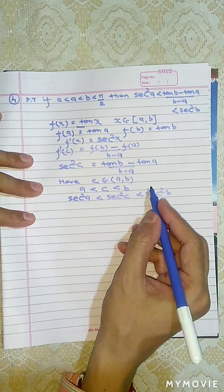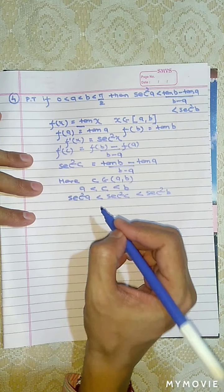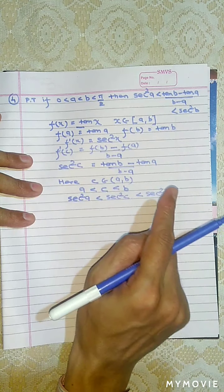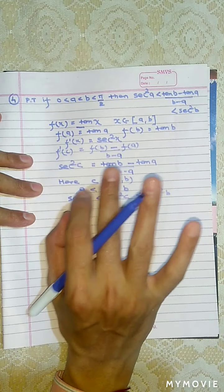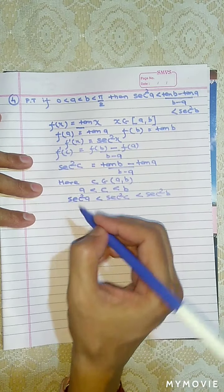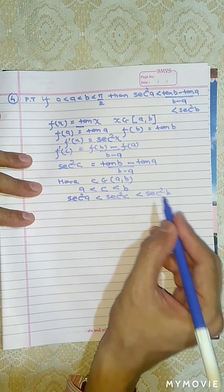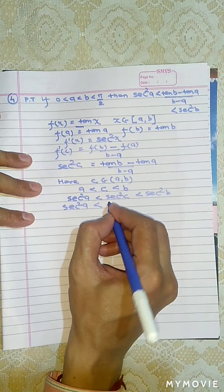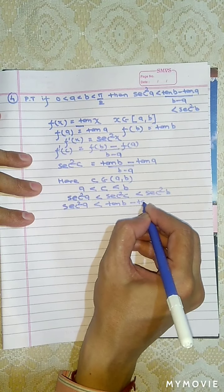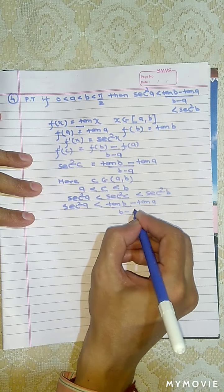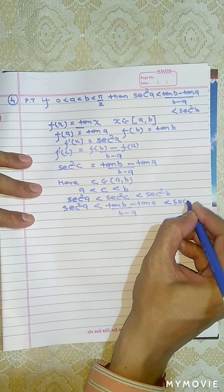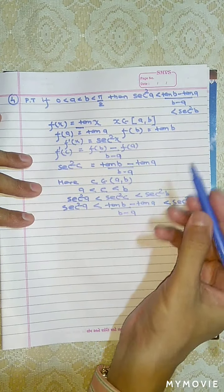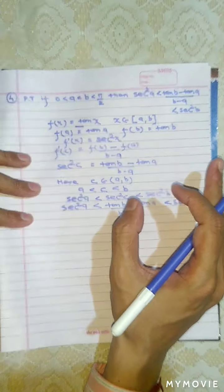Substituting sec²c = (tan b - tan a)/(b - a) into the inequality, we get: sec²a < (tan b - tan a)/(b - a) < sec²b. Hence the given statement is proved indirectly using Mean Value Theorem.